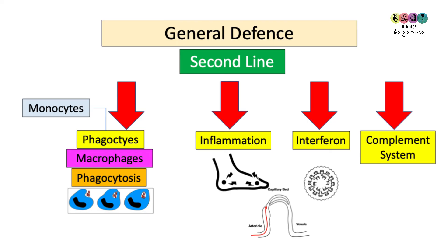This is a summary of the second line of defense. First, white blood cells — monocytes which are phagocytes, the 'munchers' — particularly macrophages performing phagocytosis. Then inflammation: hot, sore, and swollen, all due to extra blood going to the area bringing white blood cells. Then viral-infected cells releasing interferon, which signals non-infected cells to prepare.